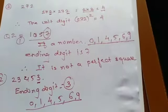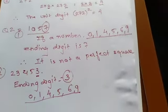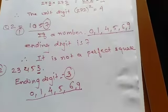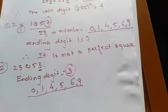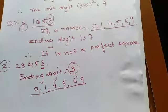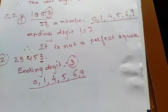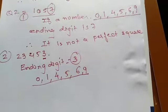But here it is 7. Therefore we can say that it is not a perfect square.